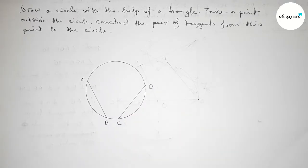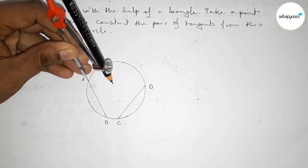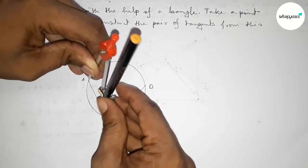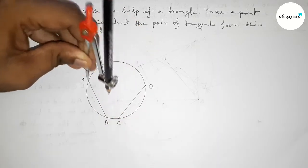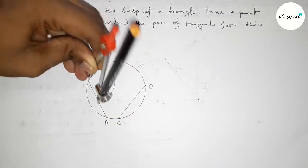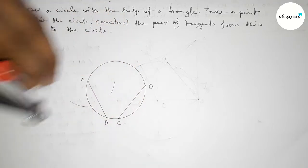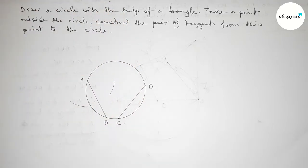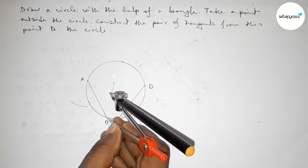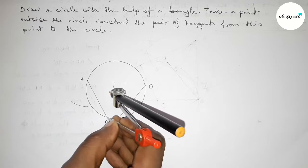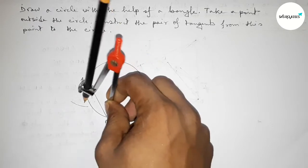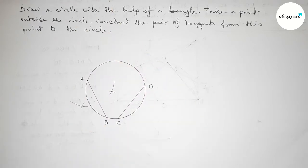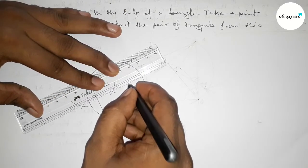Now we have to bisect the chord AB. Taking greater than half of AB and drawing an arc by this way. Now bisecting the chord AB using the compass, and joining this line.